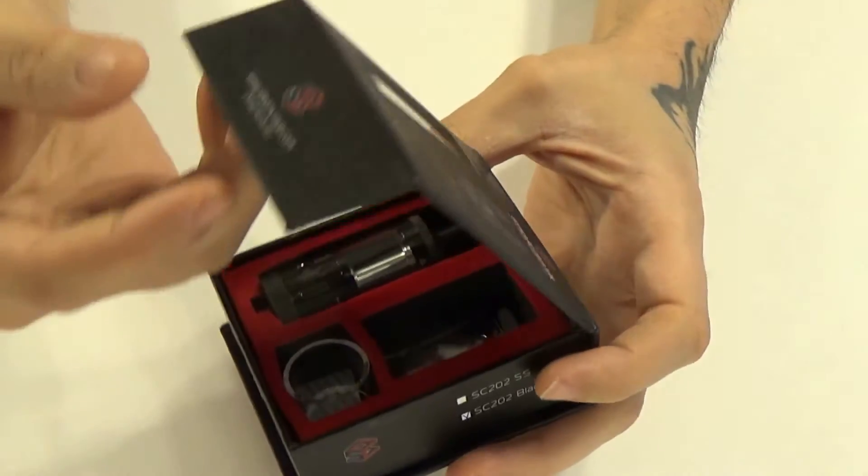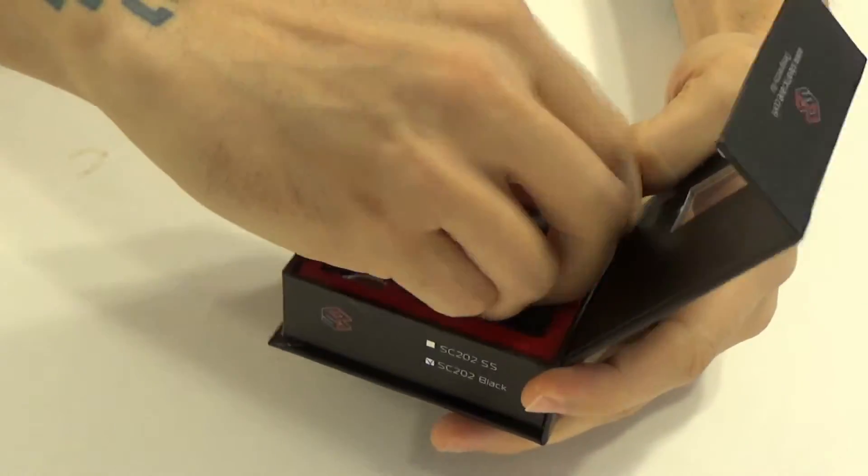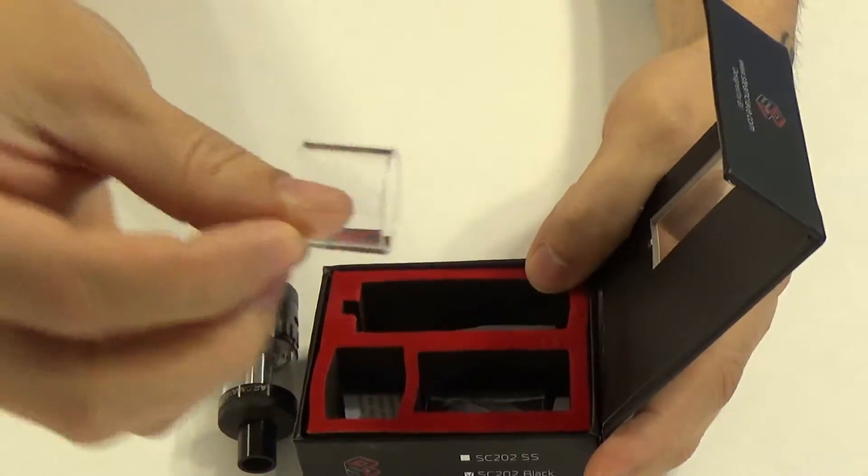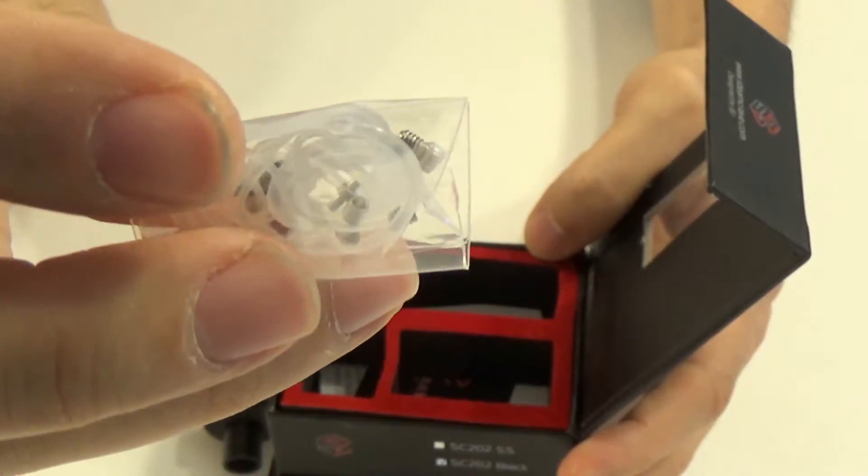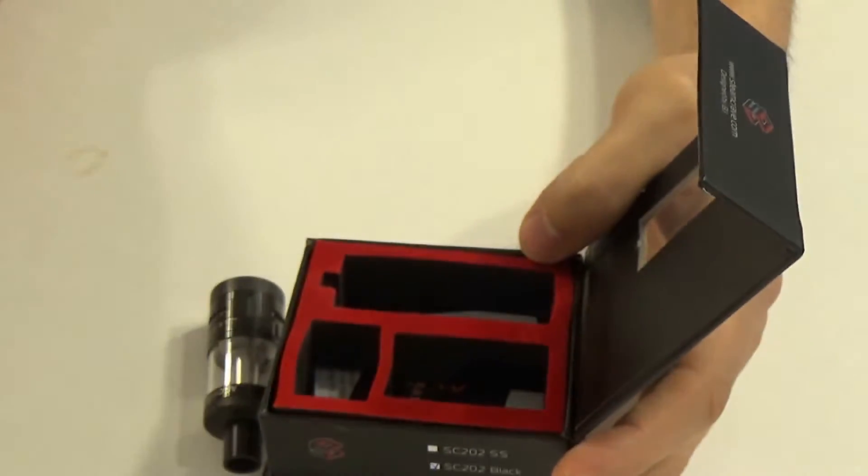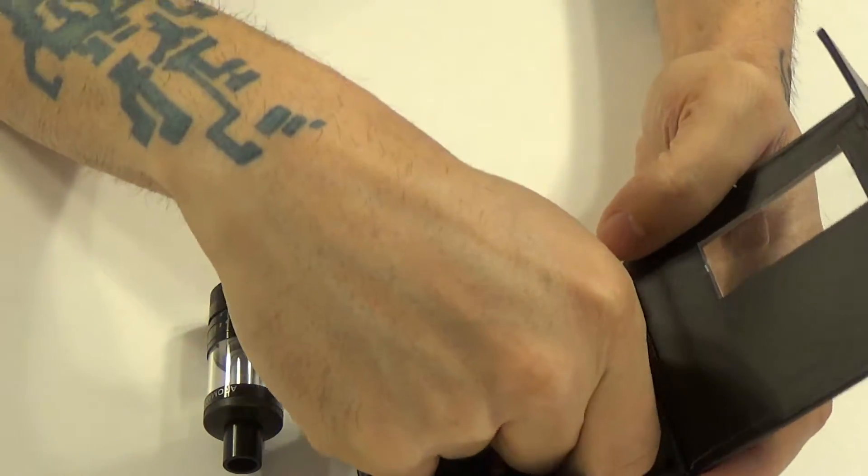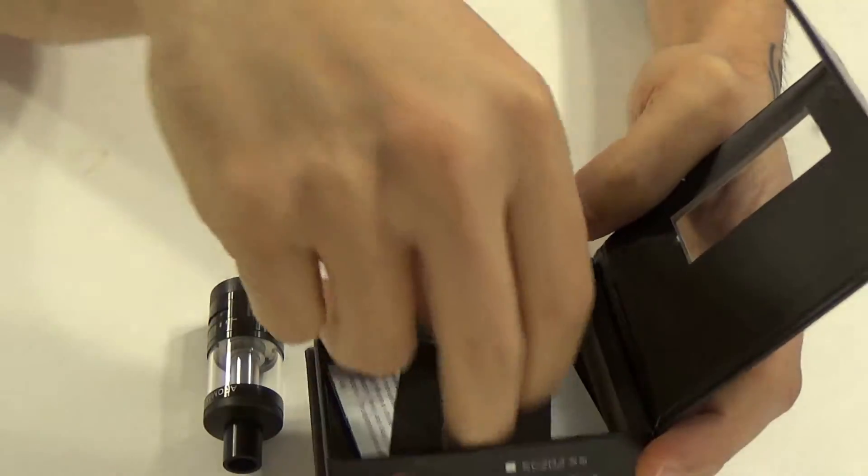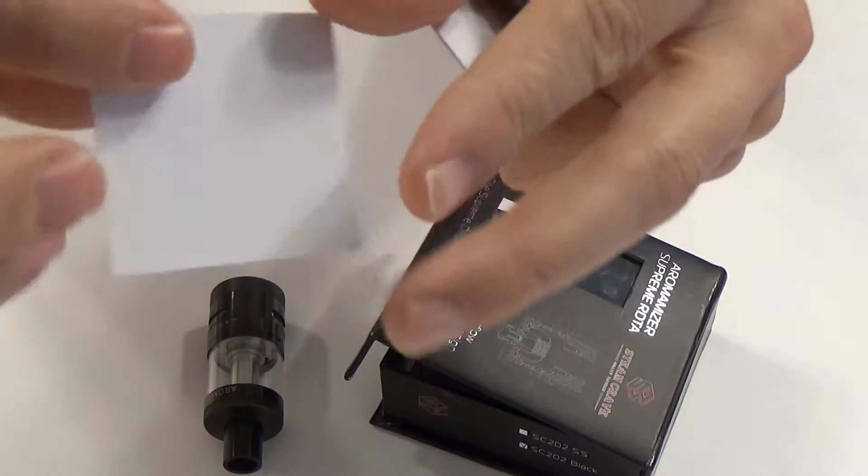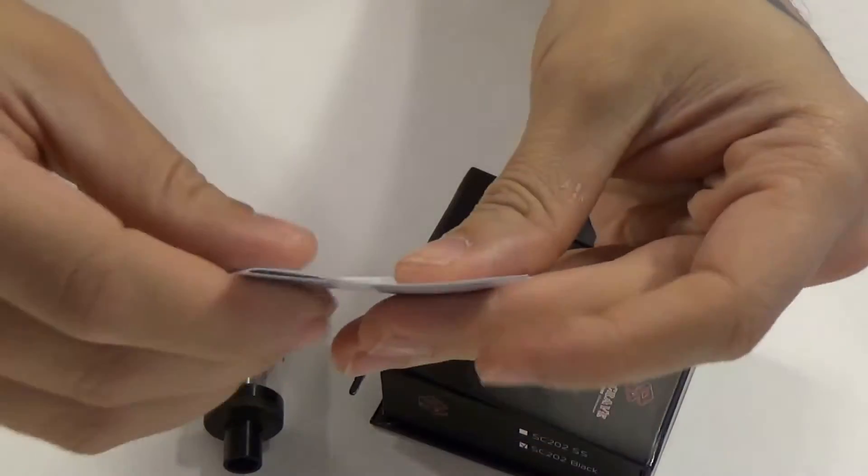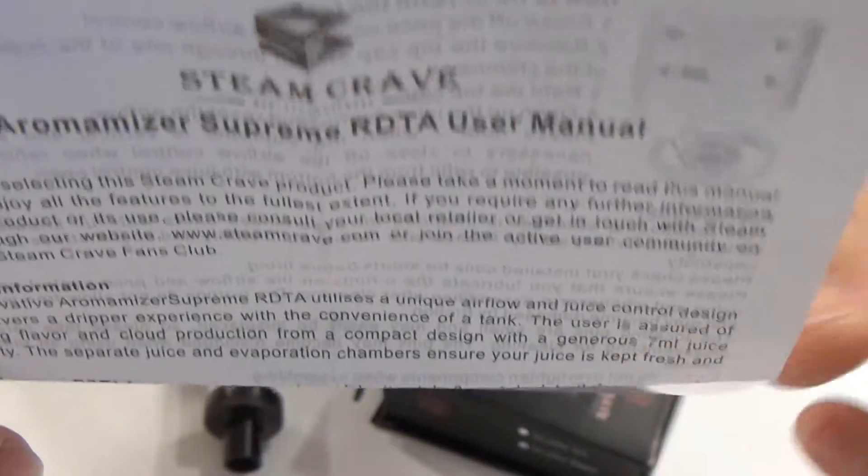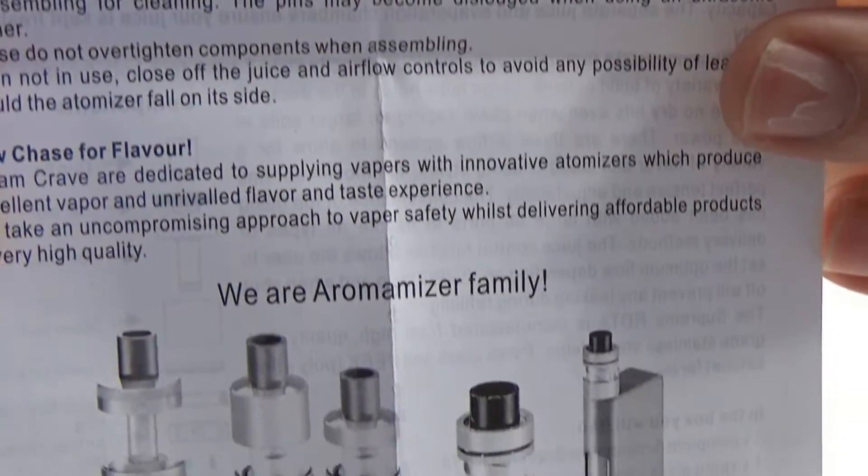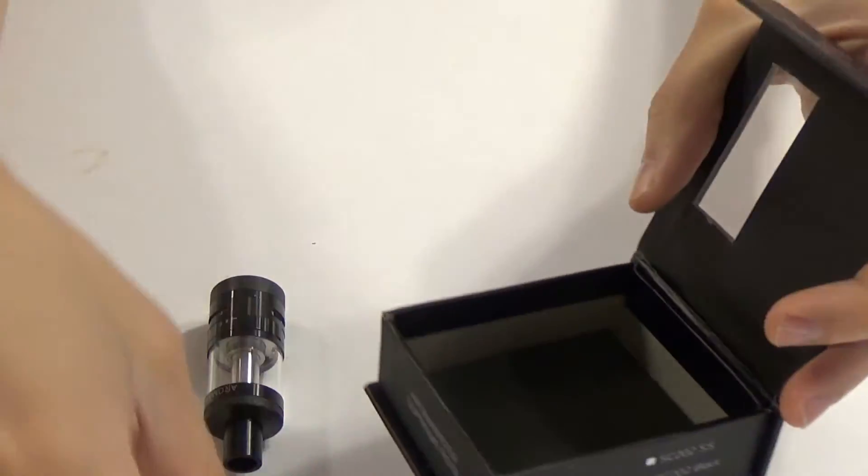Opening up the box, it is a little magnetic flip top box. You have the tank itself, which we will get to in a second. You have a spare piece of glass, a bag with a lot of little washers in it, little rubber silicone grommets, screws. Underneath that you have your Allen key, little steam crave sticker, and a little instruction pamphlet giving you the breakdown and some information on the RTA itself. On the back you have some precautions and how to fill it.